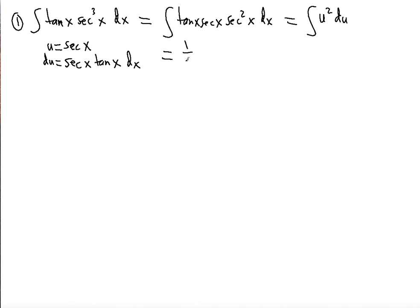Now it's easy — we just use the power rule for antiderivatives: one-third u cubed plus a constant. Putting u back in terms of the original variable gives us one-third secant cubed x plus a constant.